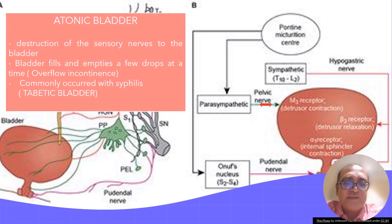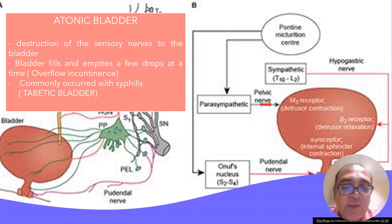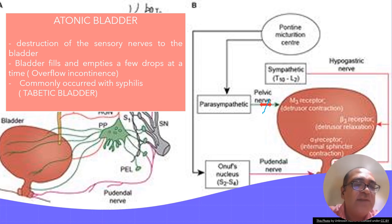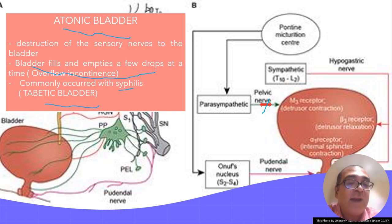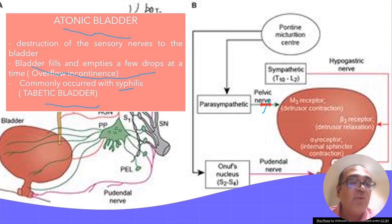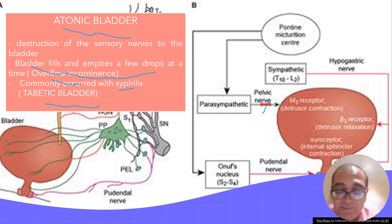The first abnormality is an atonic bladder. The lesion here is in the pelvic nerve, and as a result, no micturition reflex is initiated. The bladder fills and overflows a few drops at a time — this is known as overflow incontinence. This bladder condition, sometimes called an atonic bladder, commonly occurred with syphilis, a sexually transmitted disease that was widespread before penicillin was discovered. The lesion is in the pelvic nerves that supply the bladder.